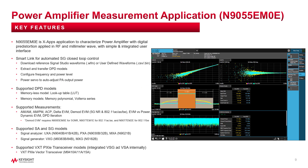N1955-EM0E is an X-App application to characterize a power amplifier with digital pre-distortion applied in RF and millimeter wave, with a simple and integrated user interface. It utilizes SmartLink for automated SG closed-loop control to support several functions, such as downloading Signal Studio waveforms or user-defined waveforms, extracting and transferring DPD models, configuring frequency and power level, and power servo to auto-adjust PA output power. For DPD models, it supports memoryless models like lookup tables and memory models such as memory polynomial and Volterra series.